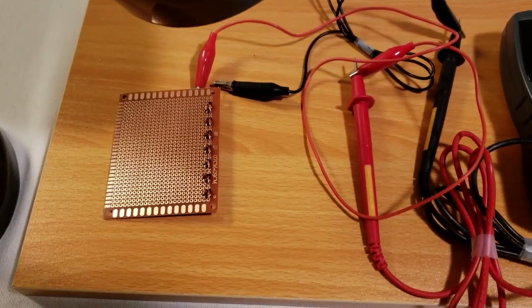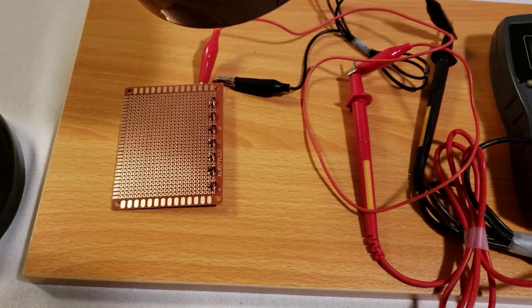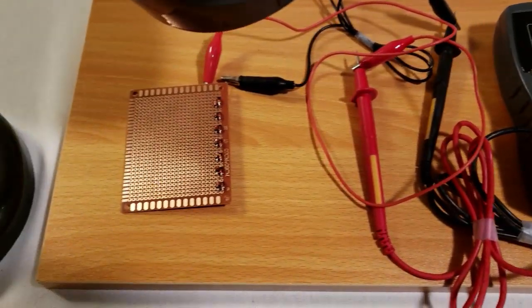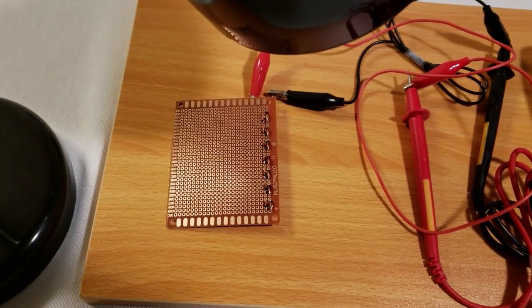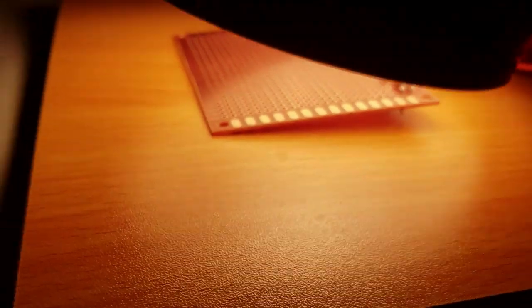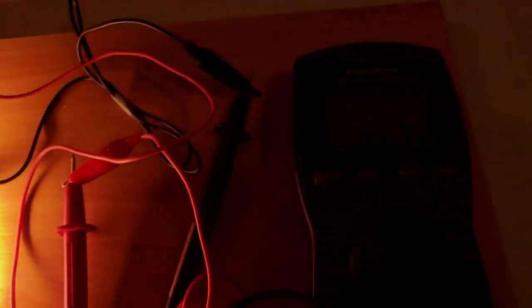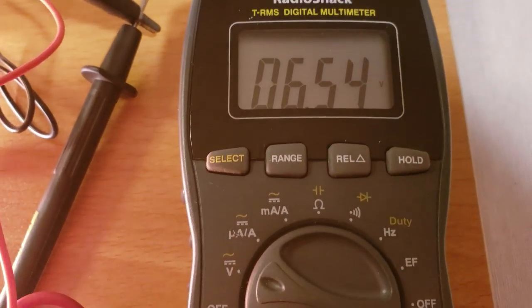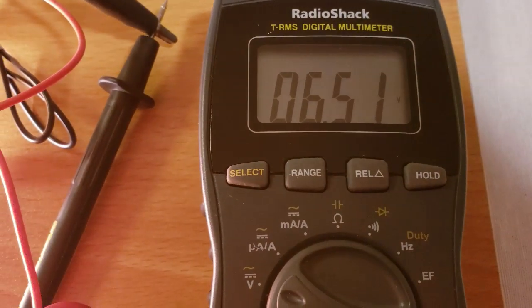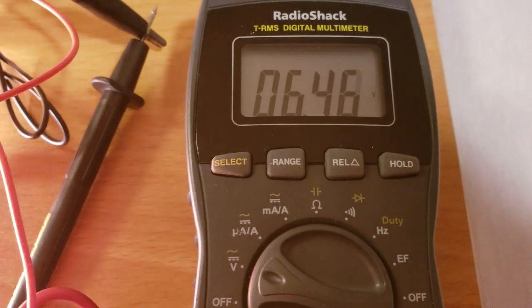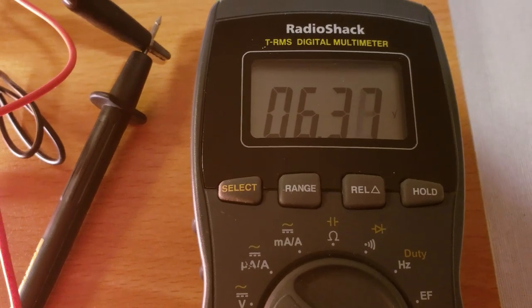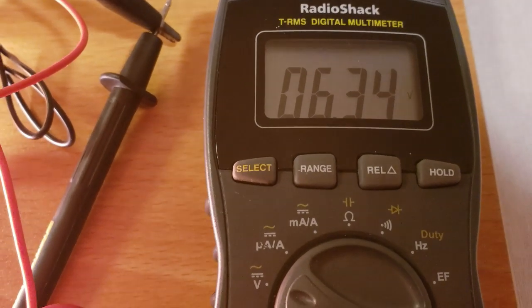So here I have 14 zener diodes in series. Let's see what voltage it's going to generate when I turn on the lamp. The 14 zener diodes are generating a voltage of about 6.5 volts. So connecting them in series increases the voltage. If you connect them in parallel, the current will increase.